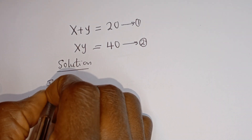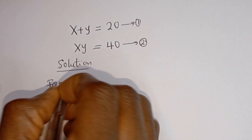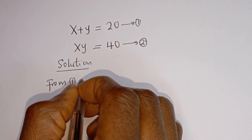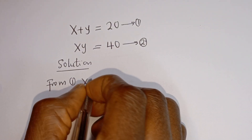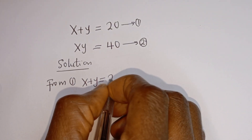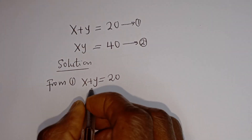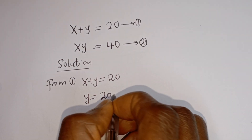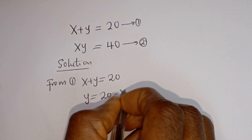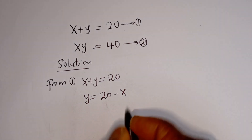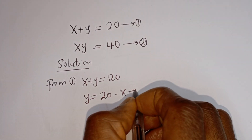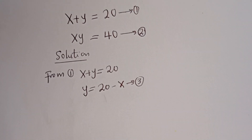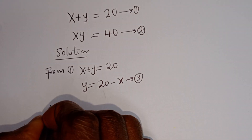From equation 1, we make y the subject of the formula. x plus y is equal to 20, so y is equal to 20 minus x. Let's call this equation 3. Then from equation 2...